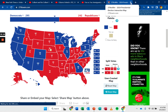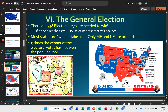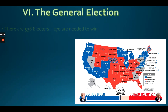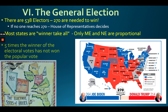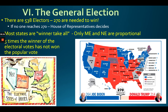There are 538 electors, but you need 270 to win. If no one reaches 270, the House of Representatives decides. Most states are winner-take-all — if you win Texas by 5 votes, you get all its electoral votes. Sometimes the candidate who wins does not win the popular vote.